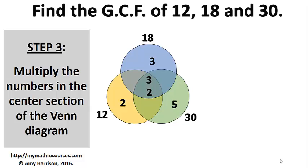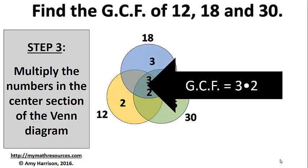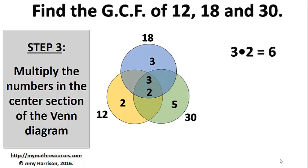Now that we have the Venn diagram filled out, we need to multiply the numbers in the center section of the Venn diagram. 3 times 2 is 6. So that means that the greatest common factor of 12, 18, and 30 is 6.